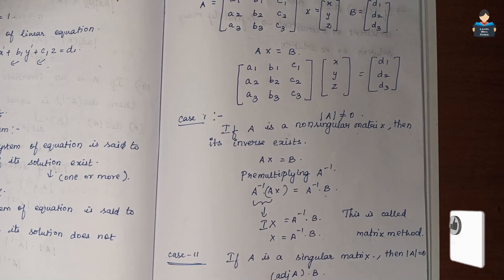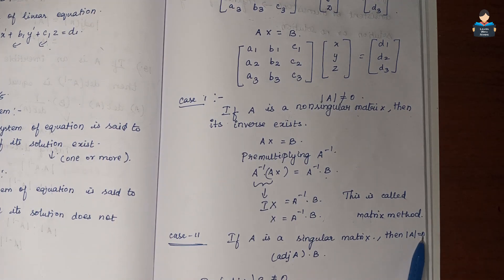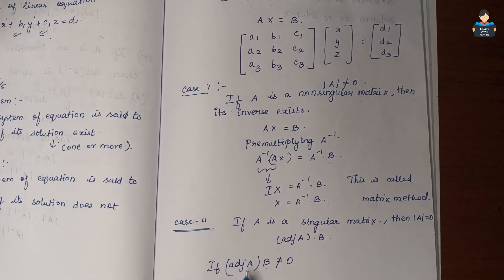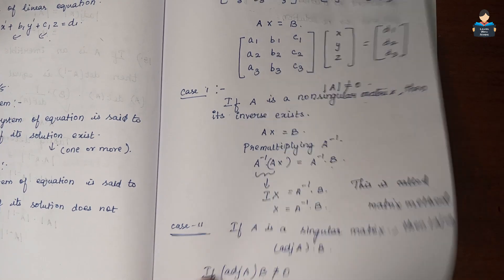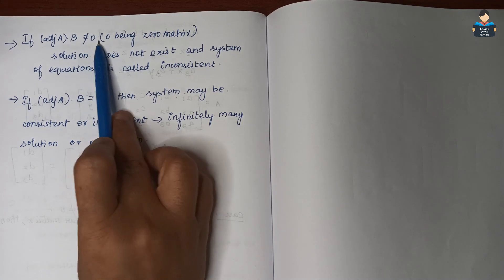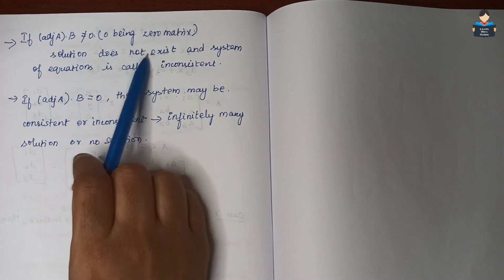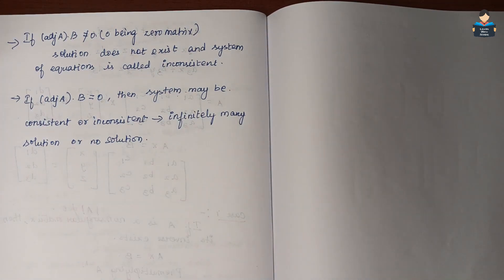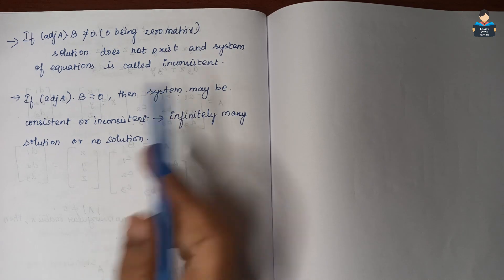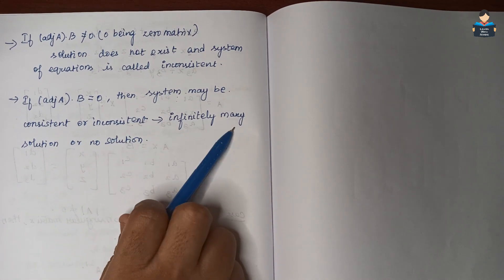Case 2: if A is a singular matrix — determinant of A equal to 0 — the inverse does not exist. We then find adjoint of A into B. If adjoint of A into B is not equal to zero, the system is inconsistent. If adjoint of A into B equals zero, the system may be consistent with infinitely many solutions or inconsistent with no solution.